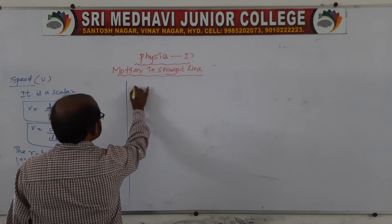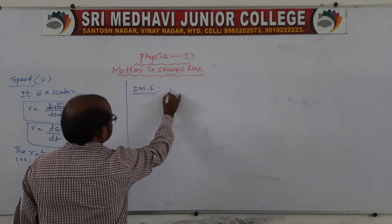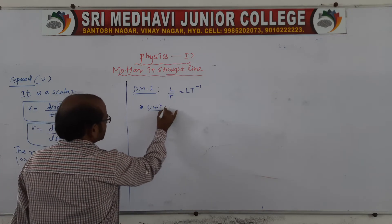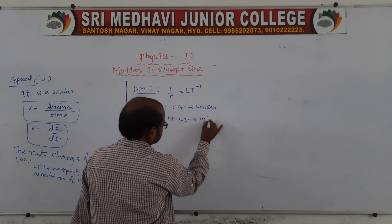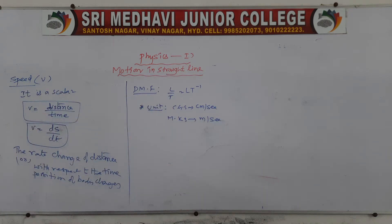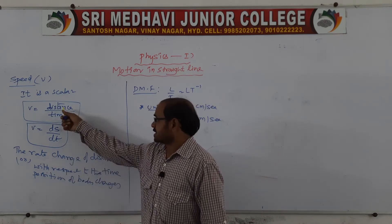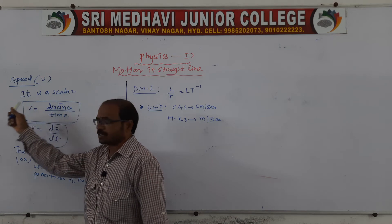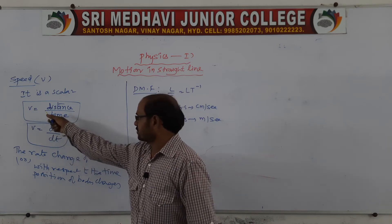The dimensional formula for speed is L/T, which gives LT⁻¹. For units: in the CGS system it is centimeters per second, and in the MKS system it is meters per second. Speed is a scalar — when writing v, do not put a bar over it, as a bar represents a vector quantity.